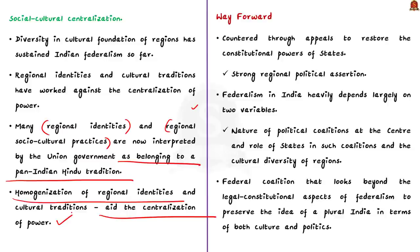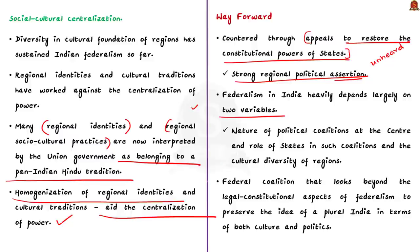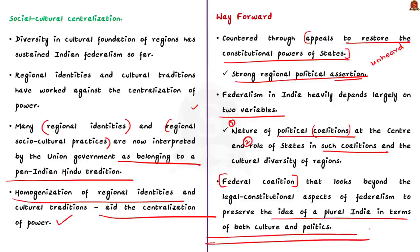How can this centralization of powers be countered? According to the author, it can be countered through appeals to restore the constitutional powers of states, backed by strong regional political assertion. Note that federalism in India depends largely on two variables: the nature of political coalitions at the center and the role of states in such coalitions, and the cultural diversity of regions. We need a federal coalition that looks beyond legal-constitutional aspects of federalism to preserve a plural India in terms of both culture and politics.